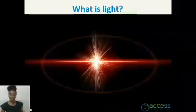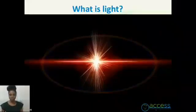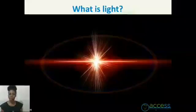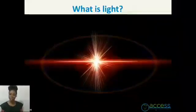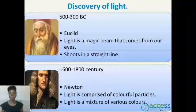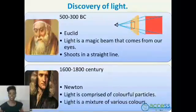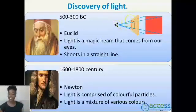So now the next aspect of my presentation is light. Light is a very strange thing — we cannot see it, but we use it to see. Throughout the ages, many researchers have taken up the challenge of trying to find out what light is. I will explain what light is by telling you a story about its discovery. Among the scientists who took up this challenge is Euclid, who around 500 to 300 BC proposed the theory that light is a magic beam that comes from our eyes and shoots in straight lines.